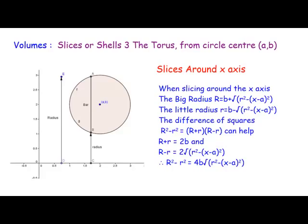You can see the little radius is B minus the square root of R² − (x − A)², and the big radius is B plus the square root of R² − (x − A)². This is rearranging the circle's equation. We're also going to use the difference of two squares: big R plus little r equals 2B, and big R minus little r equals two times the square root of R² − (x − A)². That will help with our integration.